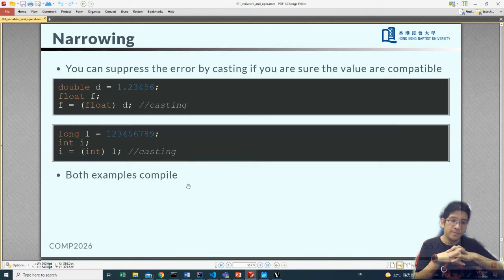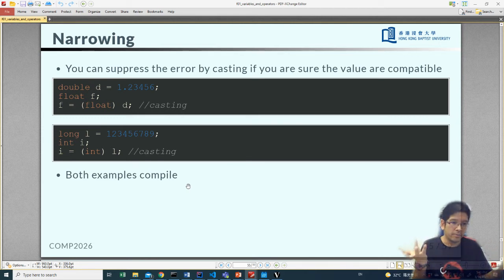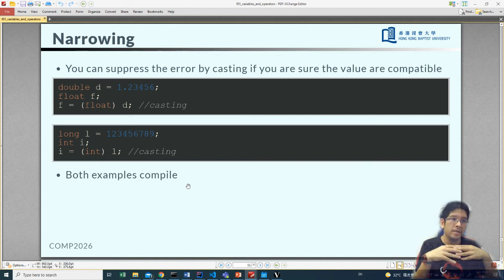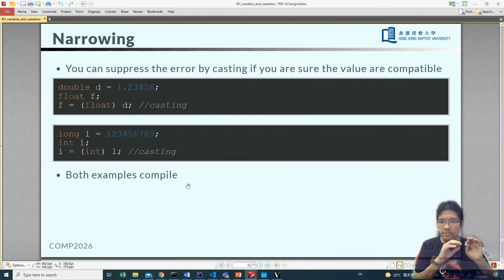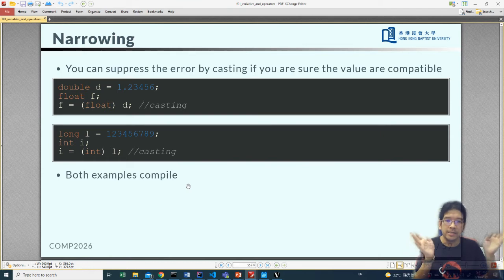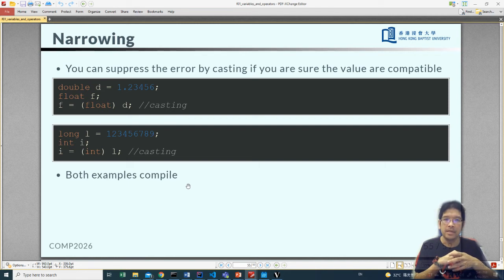And now, especially if such a thing happens that your program will crash or you have some unexpected outcome. If you are very conscious about this assignment is safe, you have done some checking already, and you think that assign a number into a float or assign a long into an integer is safe, in this case you can do something called casting, a manual casting. That will allow you to suppress the error.